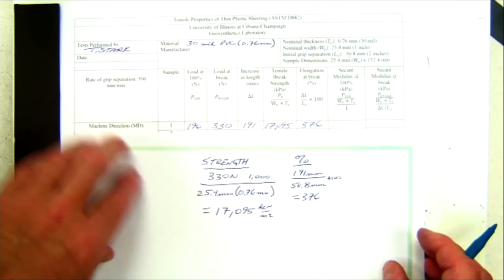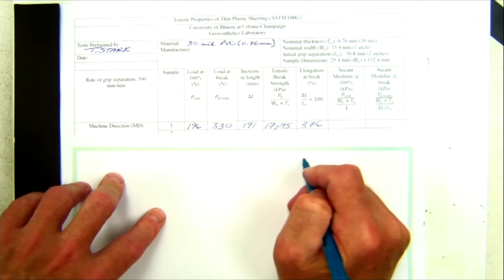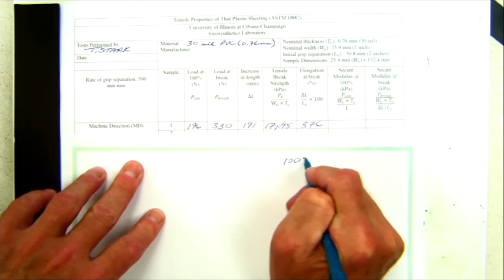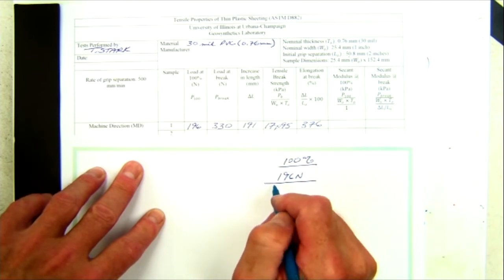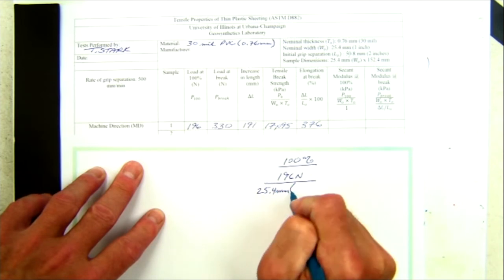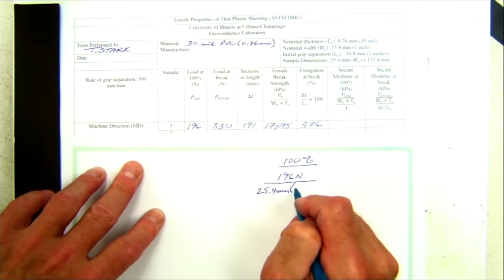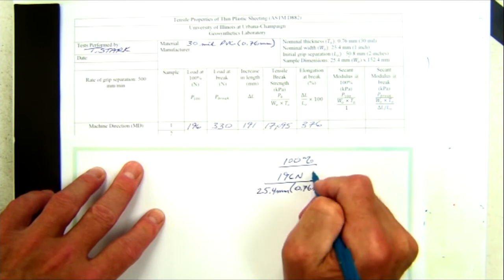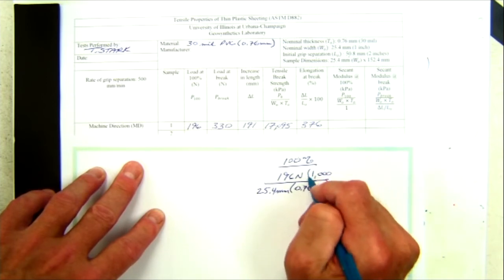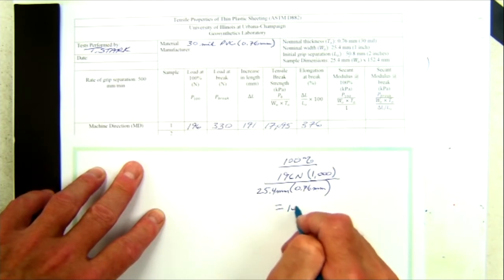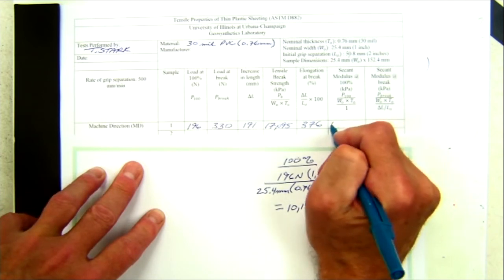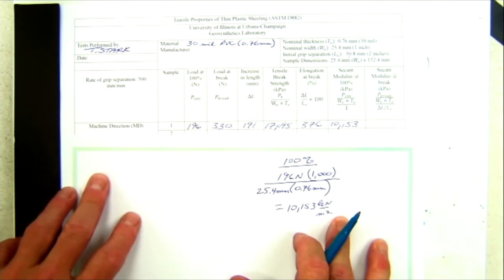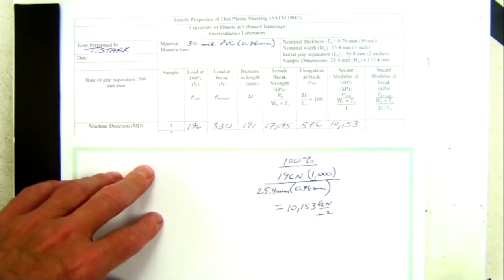Next is the calculation of the secant modulus at 100%. That uses the tensile force at 100%, which was measured during the test to be 196 Newtons, divided by W₀ — the initial width of 25.4 millimeters — times the initial thickness of 0.76 millimeters. Multiplying by 1,000 to convert millimeters to meters gives 10,153 kilonewtons per meter squared, or kPa. That is entered for the secant modulus at 100%.